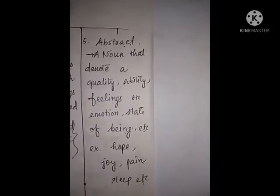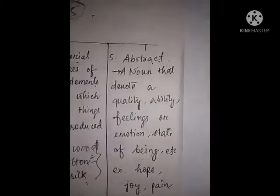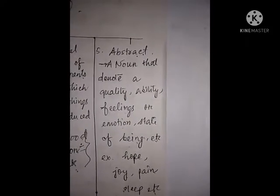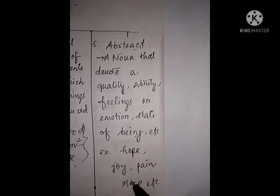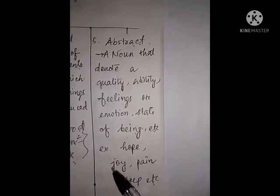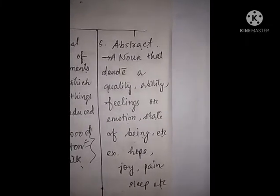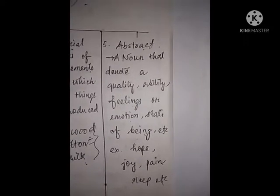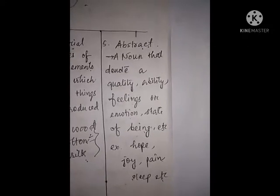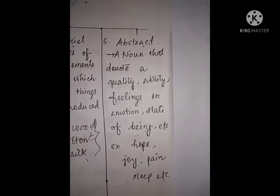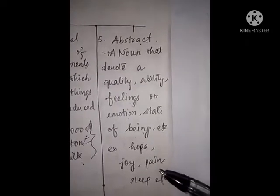You have to remember some points about abstract noun. Listen carefully: abstract nouns do not denote any physical object — means we cannot touch these. Abstract nouns can only be understood or realized with our mind. We cannot touch or see an object denoted by an abstract noun. We cannot see hope, we cannot see joy, we cannot see or touch pain.